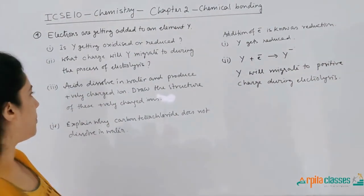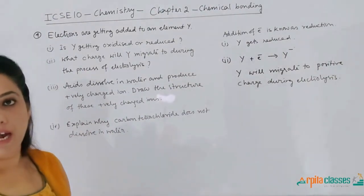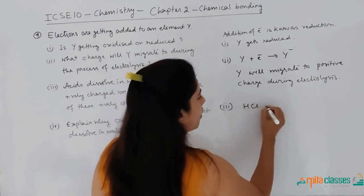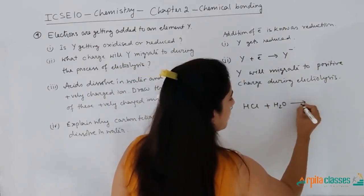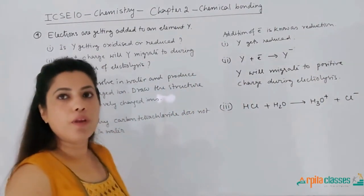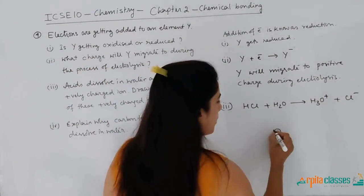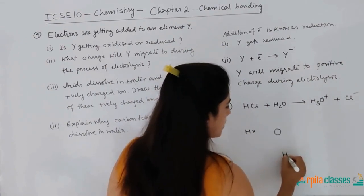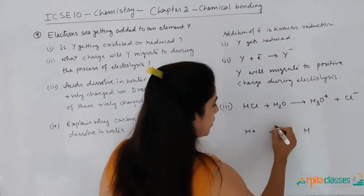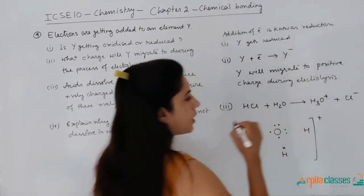An acid dissolves in water and produces a positively charged ion. Draw the structure of this positively charged ion. If you take HCl dissolved in water, it produces H₃O⁺ and Cl⁻. We draw the structure of hydronium ion H₃O⁺: two hydrogens each with one electron, one hydrogen with no electron (H⁺), and oxygen with its 6 electrons (1, 2, 3, 4, 5 and 6). This is the structure of the hydronium ion.